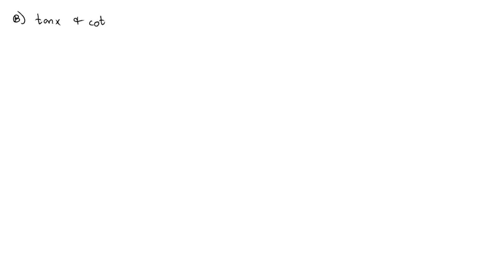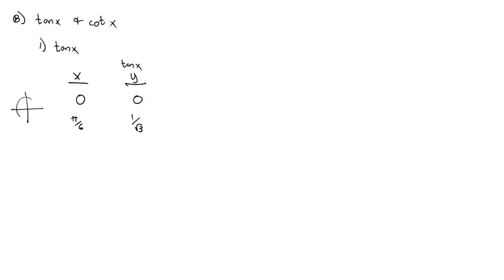Let's look at tangent x and cotangent x, starting with tangent x since we use it more often. We'll build the tangent graph using x and y coordinates where y = tan(x). At x = 0, tan = 0. At x = π/6, y = 1/√3 ≈ 0.6. At x = π/4, y = 1. At x = π/3, y = √3 ≈ 1.7.